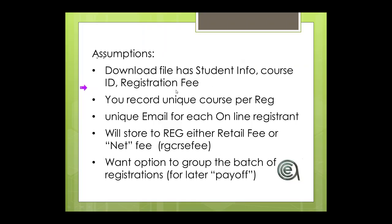Here are our general goals and assumptions. Number one: we can get a download file from your partner — either Ed2Go or Pro Train — that has student information, a course ID, and a registration fee. Number two: we are going to create a unique course per registration activity. Every different course — whether it's a QuickBooks course from Ed2Go or a writing class from Pro Train — will have a course record inside Student Manager.